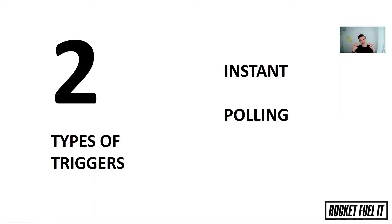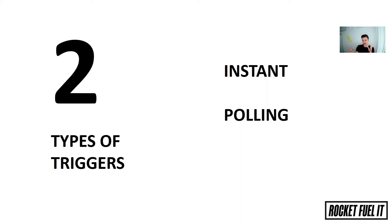With an instant trigger, you basically push something into Integromat. So a service — whatever service you're connecting, let's say MailChimp or an email service, or you're just using a webhook in Integromat — that service is pushing into Integromat, triggering it. The polling trigger, on the other hand, means Integromat is checking something else. For example, you can check a social media feed, someone's Twitter account, or whether there's been a new file updated in Google Drive. Integromat goes out, checks something, and if something happened, it triggers the event.